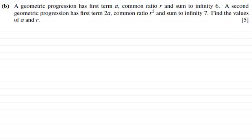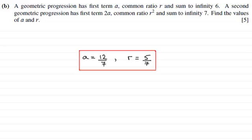If you'd like to have a go at this and haven't done so already, I'll just give you a moment to pause the video. Welcome back. Did you get these answers? a is 12 sevenths and r is 5 sevenths. If not, or you just want to see how I did it, I'll run through the worked solution.